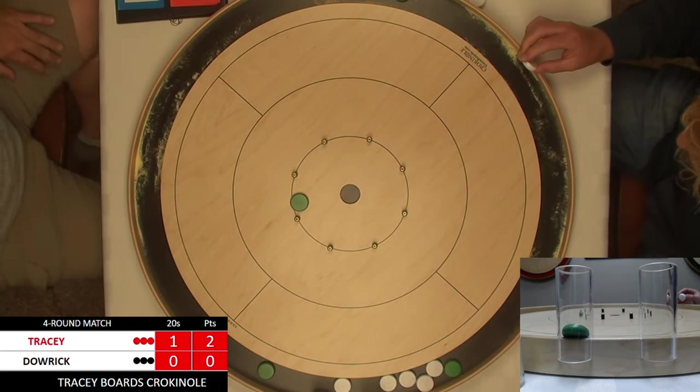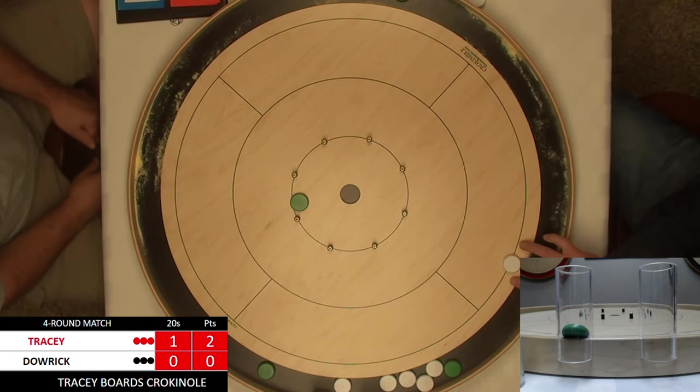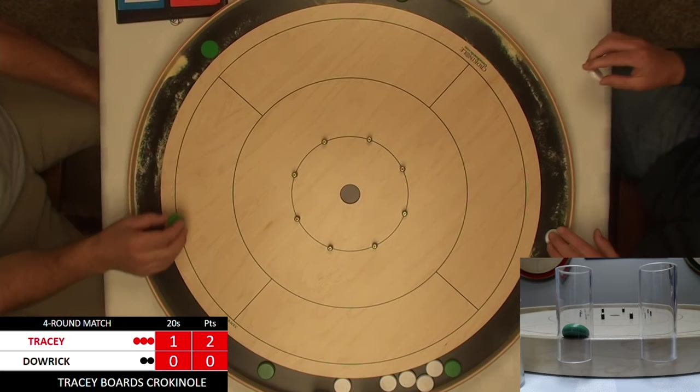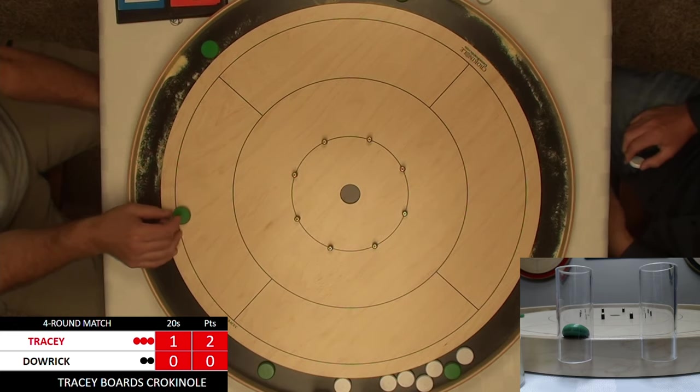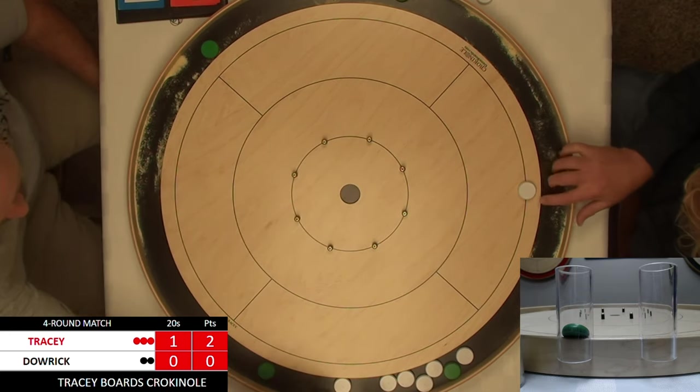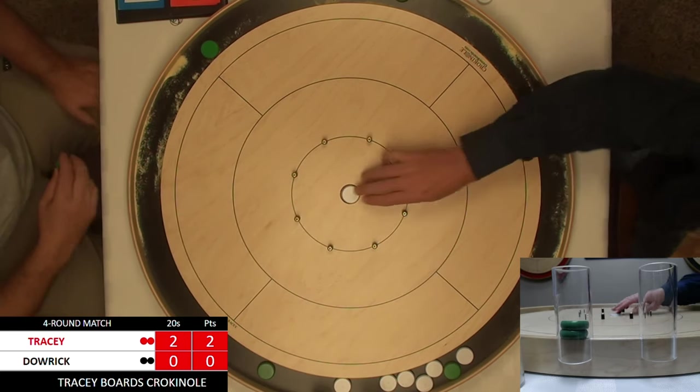He probably would have liked to keep that shooter on to have even more pressure on Simon with a 20 advantage as well as two on, but again, Simon going for that bounce back, it just wasn't the best position for it. So Jeremy up another 20, really putting the pressure on him.